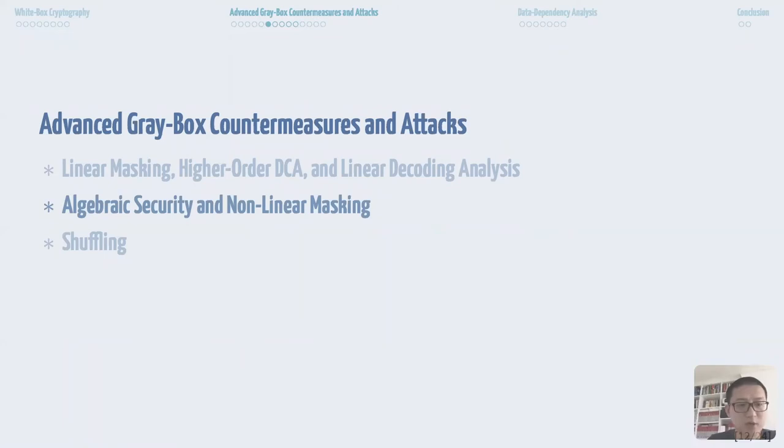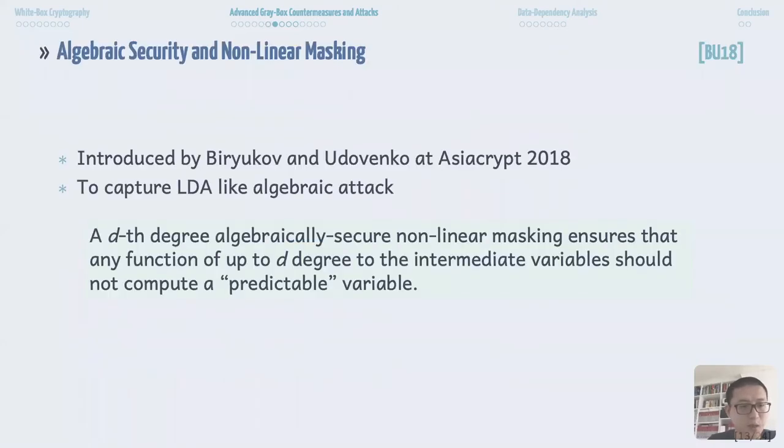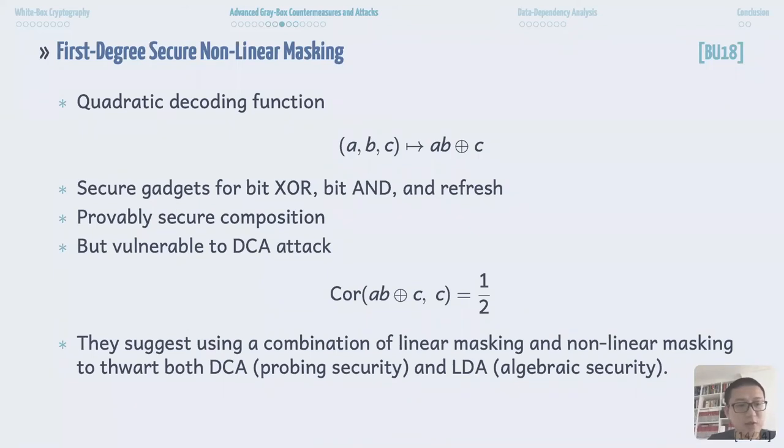Next, we talk about algebraic security and non-linear masking countermeasures. Algebraic security is proposed by Biryukov and Udovenko at AsiaCrypt 2018. In this degree algebraic security, non-linear masking ensures that any function of up to degree d of the intermediate variables shouldn't compute a predictable value. The authors also design a first degree secure non-linear masking scheme, which resists against the LDA attack. In their scheme, each sensitive variable is encoded by three variables, A, B, C, with the quadratic decoding function A times B plus C. They designed secure gadgets of basic operations and proved their compatibility.